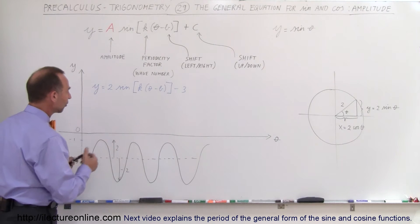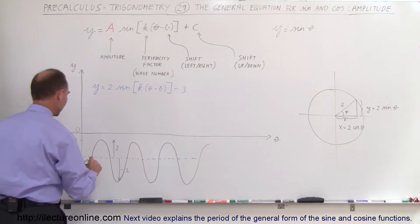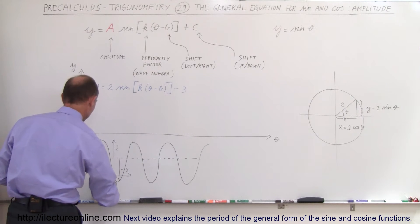The period, of course, is determined by k. The period would be 2π divided by k, so whatever the period is from there to there, this distance here would be 2π divided by k, which is known as the period.